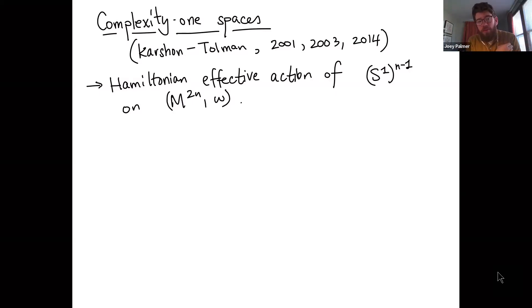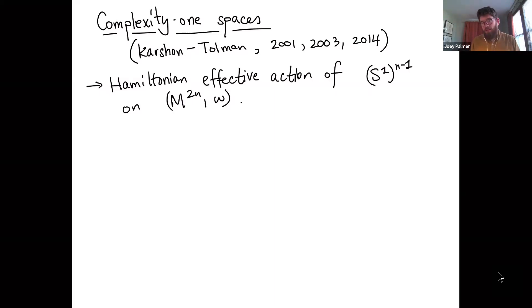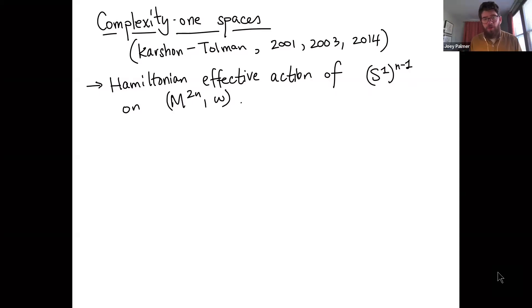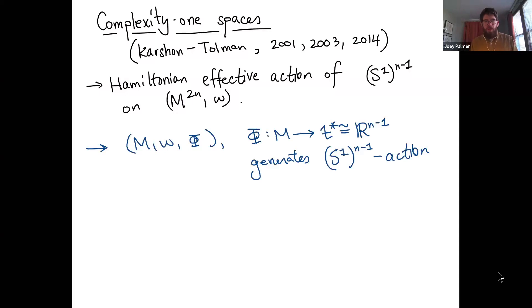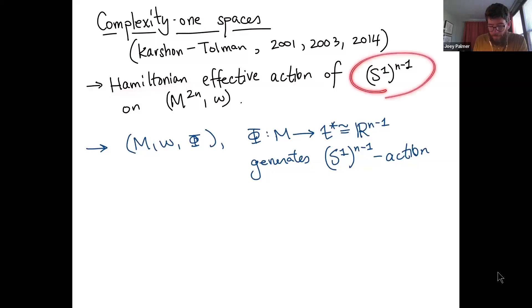The Atiyah–Guillemin–Sternberg theorem still applies — the moment image is still a polytope, the convex hull of fixed points — but Delzant's theorem definitely does not apply. There are lots of different complexity one spaces with the same moment image, so you can't classify them just by the moment image. The situation is much more complicated.